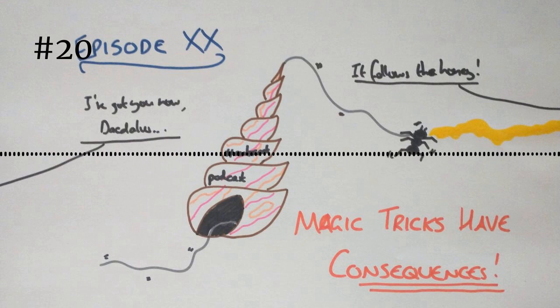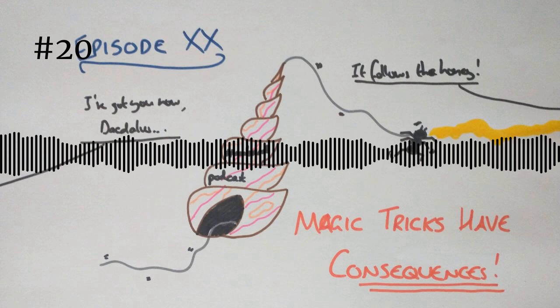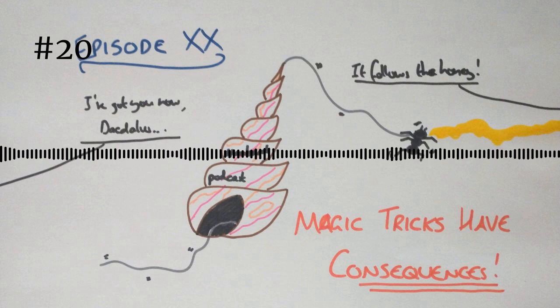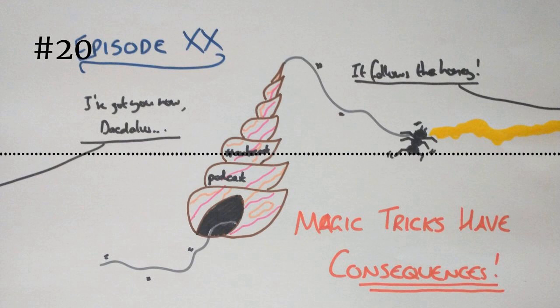Daedalus drilled a hole into it. Okay, because he's a smart boy. The string was tied to an ant which was allowed to crawl through the shell. Right, which is very smart thinking. Daedalus put honey at the hole he had built to lure the ants through. Still a very smart cookie.